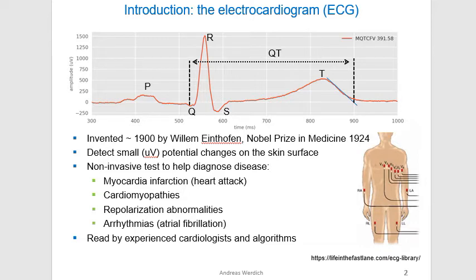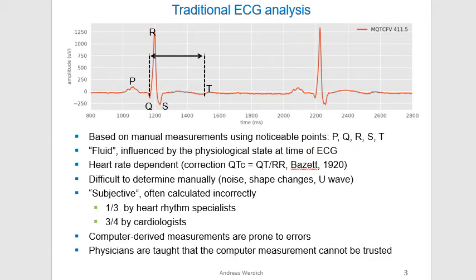The ECG is usually read by experienced cardiologists and algorithms. Traditional ECG analysis is based on manual measurements using noticeable points on the ECG curve. The measurements are fluid, meaning they can be influenced by the physiological state at the time of the ECG — for example, in the morning or at night, or during winter versus summer. The measurements are heart rate dependent, and it is difficult to manually determine these conditions because of noise and shape changes. The measurements are subjective and often calculated incorrectly, even by cardiologists or heart rhythm specialists. Computer-derived measurements are also known to be prone to errors, and physicians are taught that computer measurements cannot be trusted.